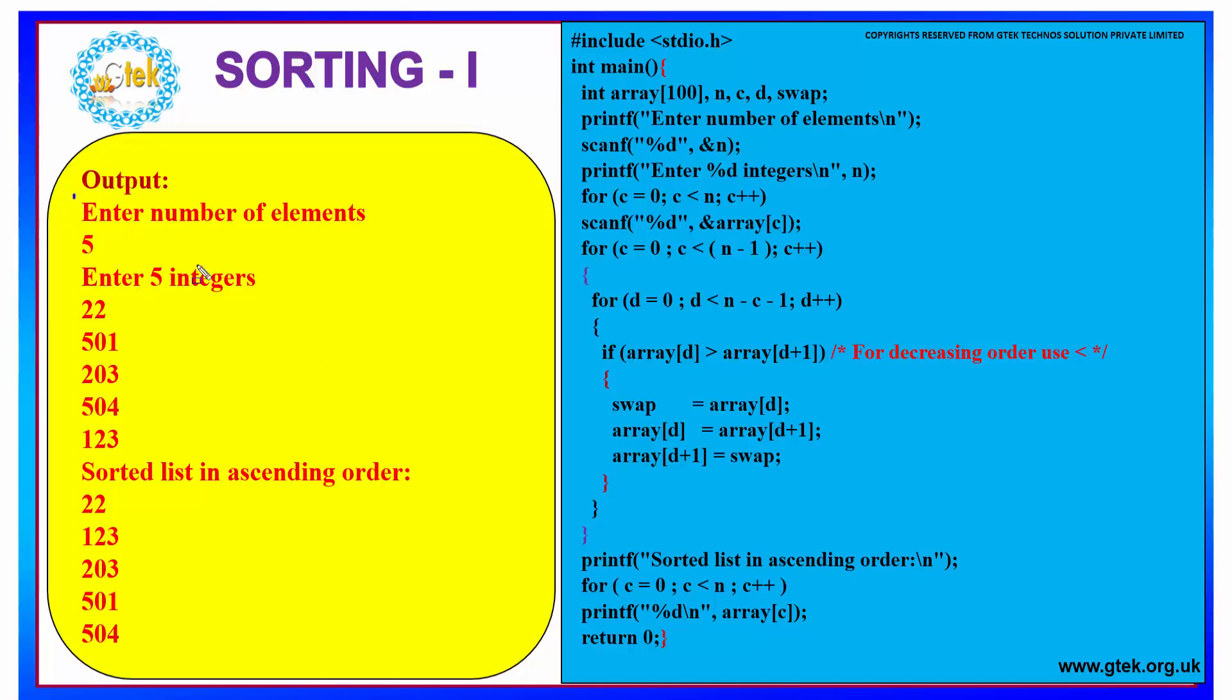Here we have to get initially the total number of elements. Here we have got five elements followed by our next step of entering the five elements. Say here we have five integers, so we are entering five integers in random fashion. Our output should be the sorted list in ascending order. So these numbers should be sorted in ascending order. So how to do this using a program?